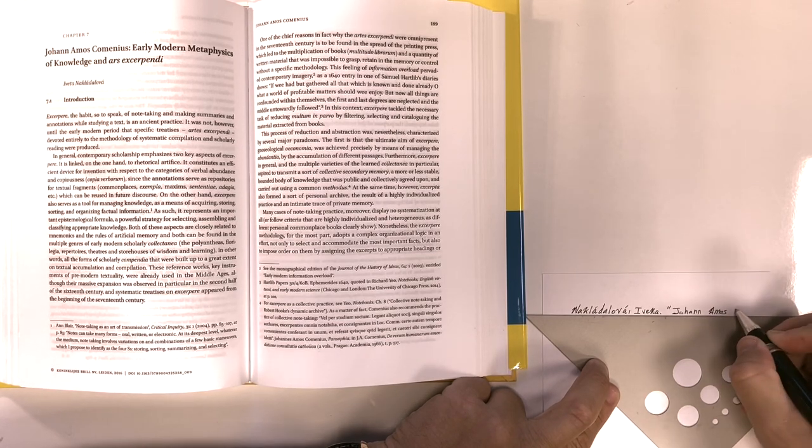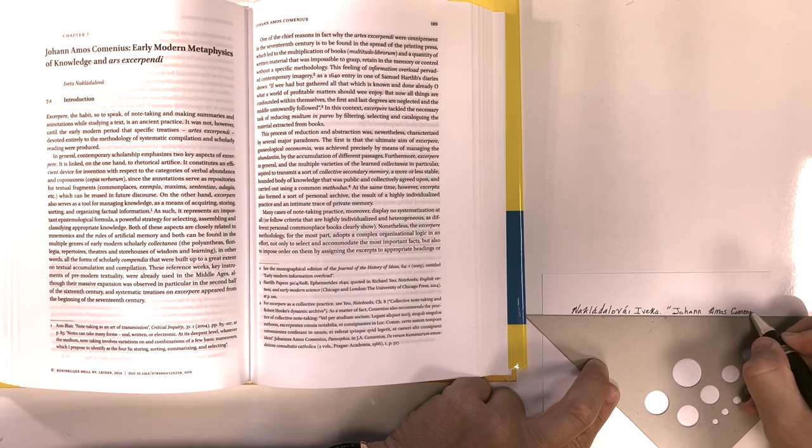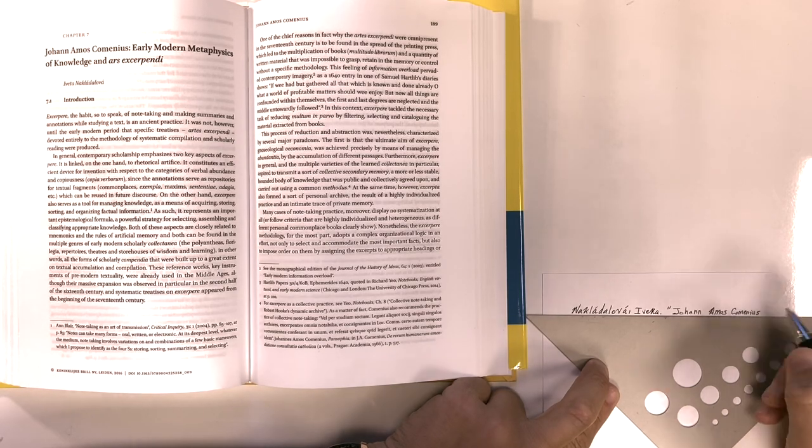And what I'm then writing is the title of this chapter in this book. As you can see, it's Johann Amos Comenius, Early Modern Metaphysics of Knowledge and Ars Exerpendi.